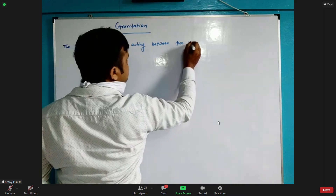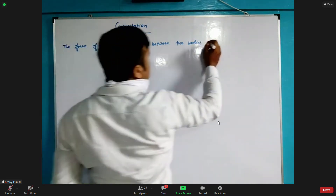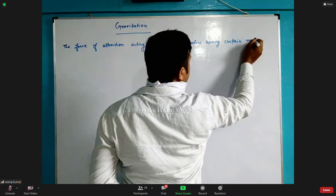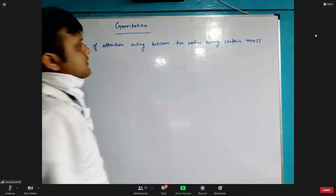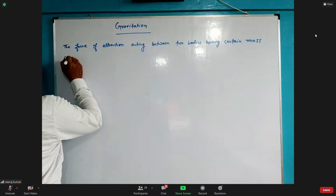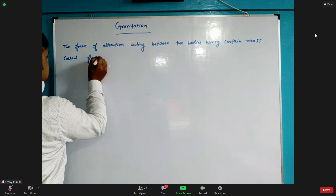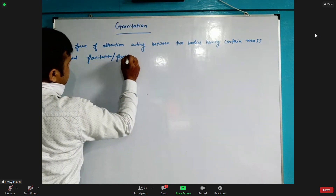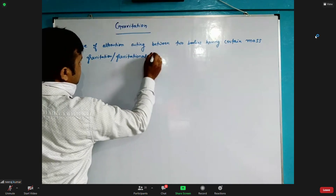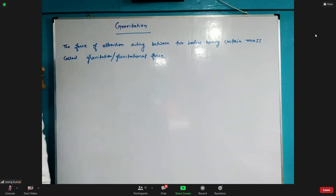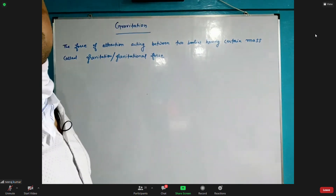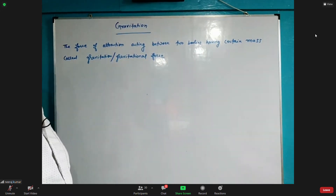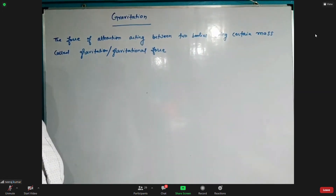Two bodies having certain mass — this is called gravitation, or gravitational force. Every two bodies, if they have mass, will attract each other by a certain force.